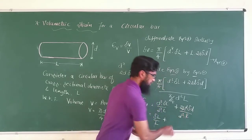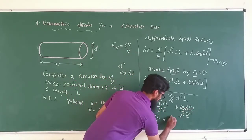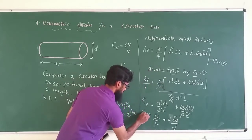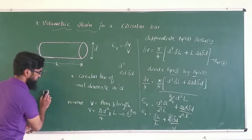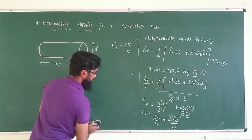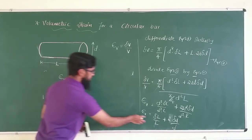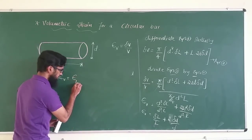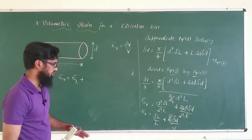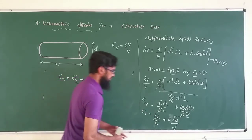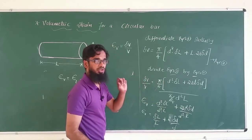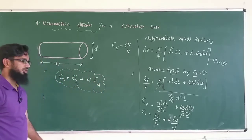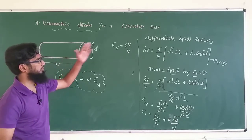Finally, εv = δl/l + 2·δd/d. Here δl/l is the strain in the longitudinal direction, represented as εl, and δd/d is the lateral strain, represented as εd. So the volumetric strain for a circular bar is εv = εl + 2εd. This is the complete equation for the volumetric strain of a circular bar.